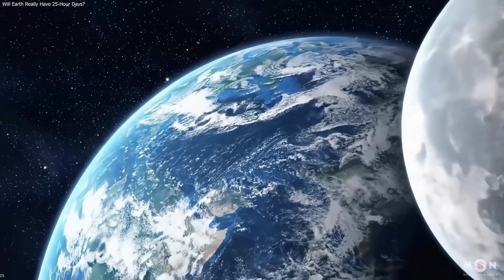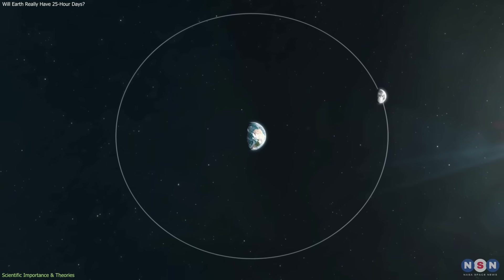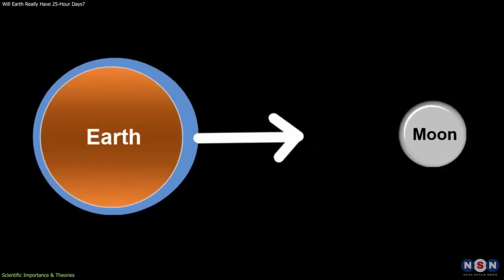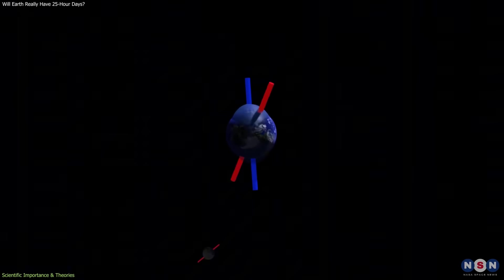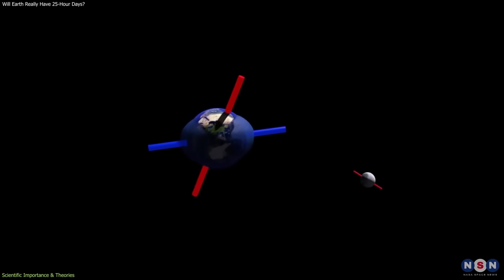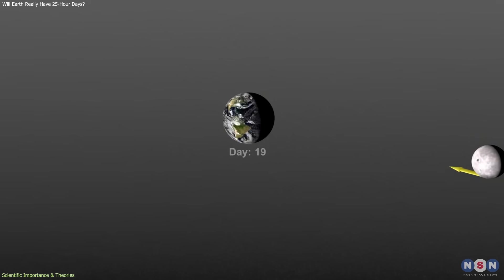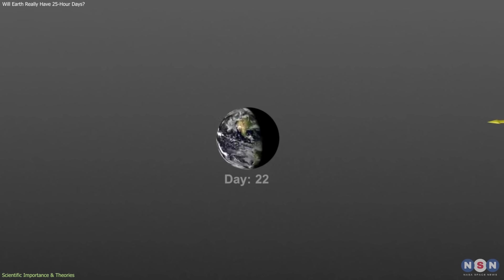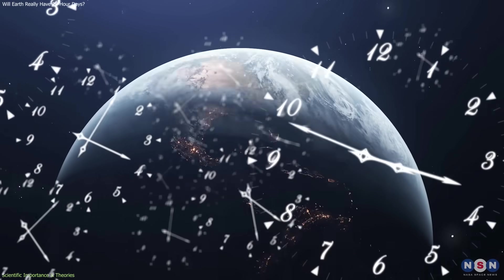The primary driver of Earth's long-term rotational slowdown is the Moon. The physics behind this process is well understood and has been operating for billions of years. The Moon's gravity pulls on Earth's oceans, creating tidal bulges. Because Earth rotates faster than the Moon orbits, these bulges are carried slightly ahead of the Moon's position. This offset creates a gravitational interaction that acts as a brake. The Moon pulls back on the bulges, removing rotational energy from Earth. That energy is transferred to the Moon's orbit, causing the Moon to slowly move farther away while Earth's rotation gradually slows. This process, known as tidal friction, explains why days lengthen over geological time.